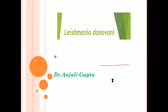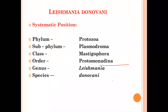Leishmania donovani is a protozoan. We can see the systematic position of Leishmania donovani. It is in phylum Protozoa, subphylum Plasmoderma, class Mastigophora, order Protomonadina, genus Leishmania, and species donovani.